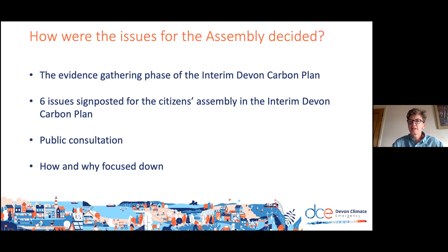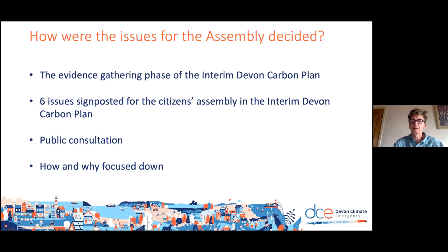The evidence-gathering phase of the interim Devon Carbon Plan isolated six particular issues that could be provided to the citizens assembly for consideration. Over the last few months, these six issues have been narrowed down to three. One of the six was about landscape character — how should the landscapes of Devon evolve to meet the net zero challenge — and another was about diet, food, and farming, in particular national calls by the Committee on Climate Change to reduce the intake of beef, lamb, and dairy products by 10 to 20 percent nationally over the coming decades.